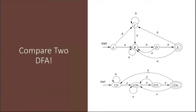Here we have two different DFAs. The first DFA has five states and the second DFA has four states. If you observe both DFAs, looking at the first DFA you can see that a string can start with A or B. If starting with B, you go to state C, and from C you come back, and there is a path that can lead you to the final state.